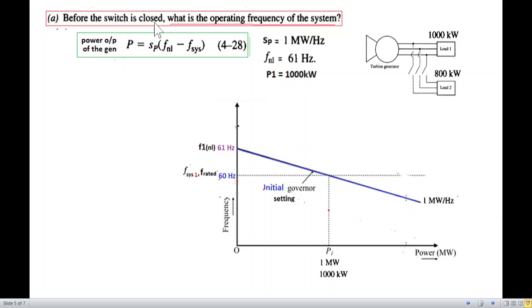Okay, so we'll work with this equation to solve this question. The first part, before the switch is closed, what is the operating frequency of the system? These parameters are given. So first of all, we draw this slope curve. From 61 hertz is the no load. And then the power is given 1 megawatt. So if we take these two points and we draw a line at this point, this will be the slope, which will be at 1 megawatt per hertz. Now, look, when we have 1 megawatt, then the drop here is 1 hertz. So we can say the slope is 1 megawatt per hertz.